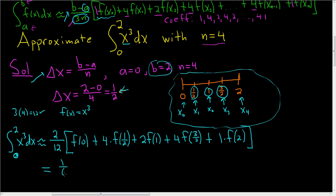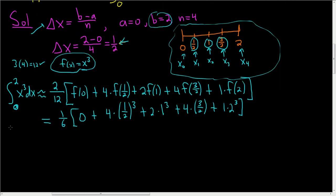This is 1 sixth. f of 0 is 0 cubed, right? We're plugging it in here into f of x. So we just get 0 plus 4 times 1 half cubed, plus 2 times 1 cubed, plus 4 times 3 halves cubed, right? We just cube all the x's. Plus 1 times 2 cubed, what a mess. And if you work this out, it magically gives you 4. So that's the answer using Simpson's rule.